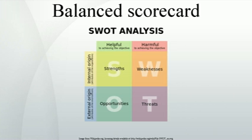The first versions of the balanced scorecard asserted that relevance should derive from the corporate strategy, and proposed design methods that focused on choosing measures and targets associated with the main activities required to implement the strategy. As the initial audience for this were the readers of the Harvard Business Review, the proposal was translated into a form that made sense to a typical reader of that journal, one relevant to a mid-sized US business.